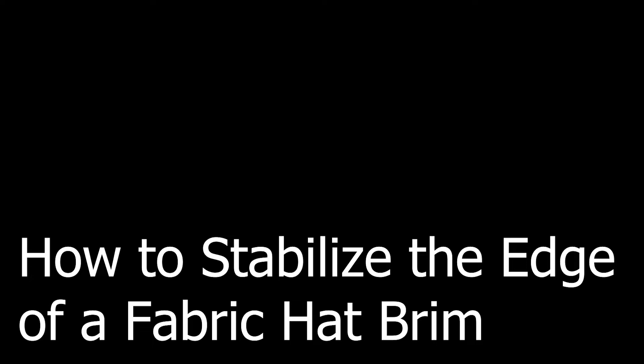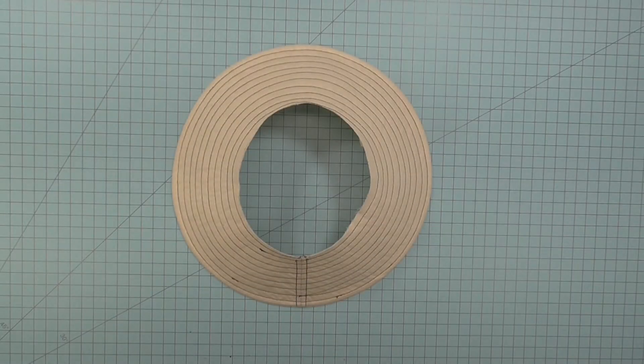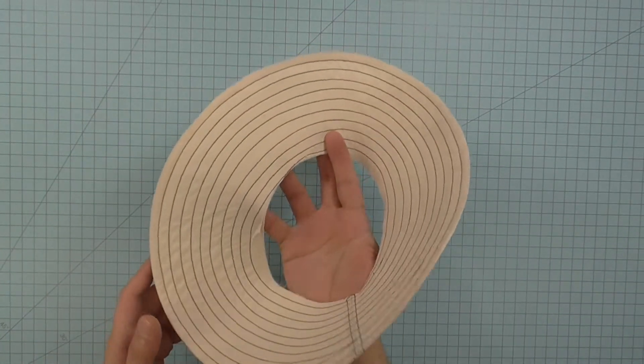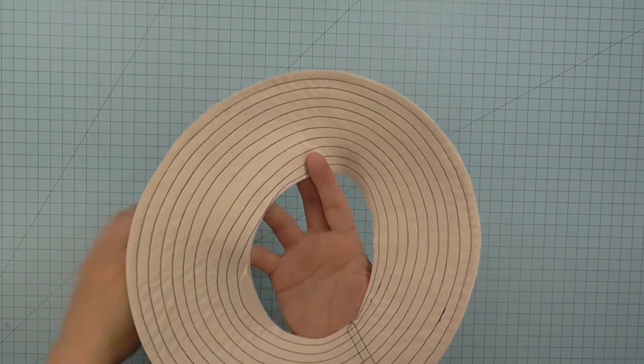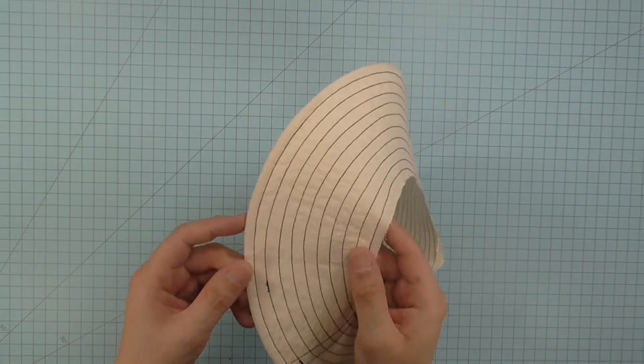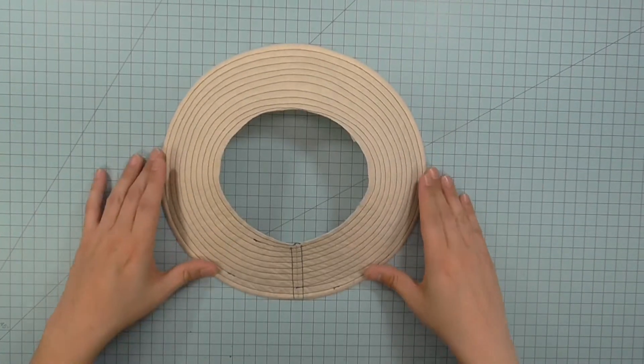I suggest you watch those videos before beginning this one. I will only be covering the necessary steps for completing this technique in this video. This technique yields a flexible but still stabilized outer hat brim edge. This technique works on symmetrical and asymmetrical hat brims. It does not work very well for outer hat brim edges that are shaped with scallops or points.